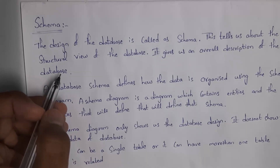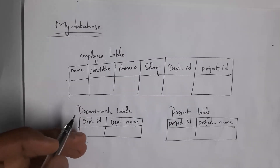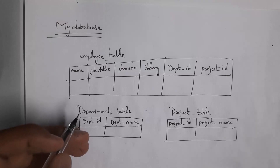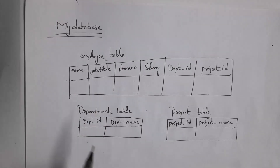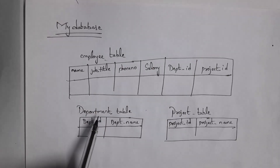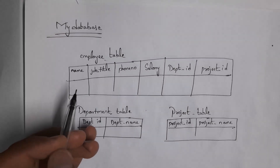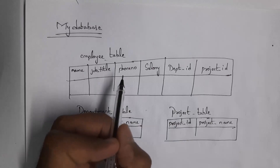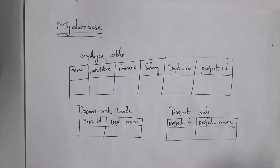I will give one example so that you can clearly understand what is schema. Let us consider my database name is MyDatabase. My database contains three tables: one table is the employee table, one table is the department table, and one table is the project table. Employee table contains six columns: name, job title, phone number, salary, department ID, and project ID.